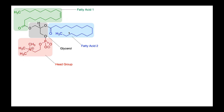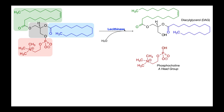Phospholipids are composed of a glycerol backbone, just like triglycerides, except instead of having three fatty acids, they only have two. So this one in green up here is the first fatty acid, and this one in blue is the second fatty acid. But unlike triglycerides, the phospholipids have only two fatty acids and then a phosphate with a head group. The phosphate has the phosphorus and several oxygen atoms, and then attached to one of those is some other compound. This whole thing in red is the head group. Lecithinases are going to use water to break the bond between the oxygen of the glycerol and the phosphorus of the phosphate.